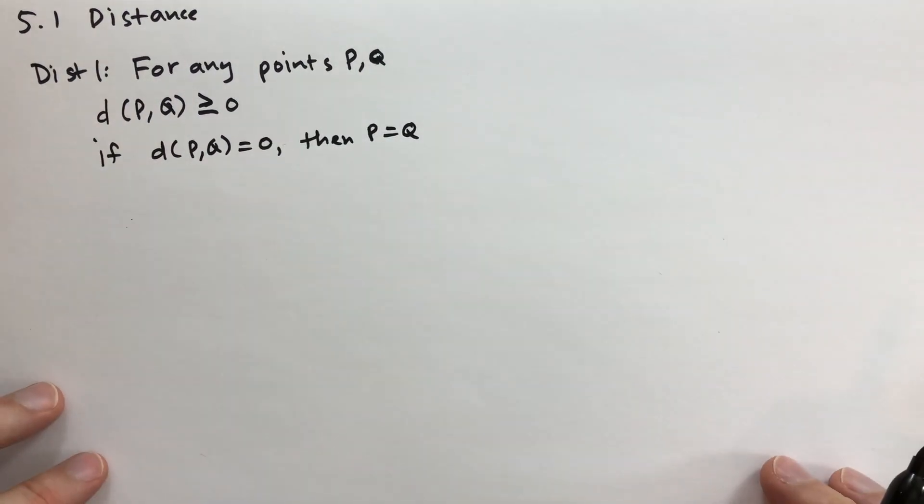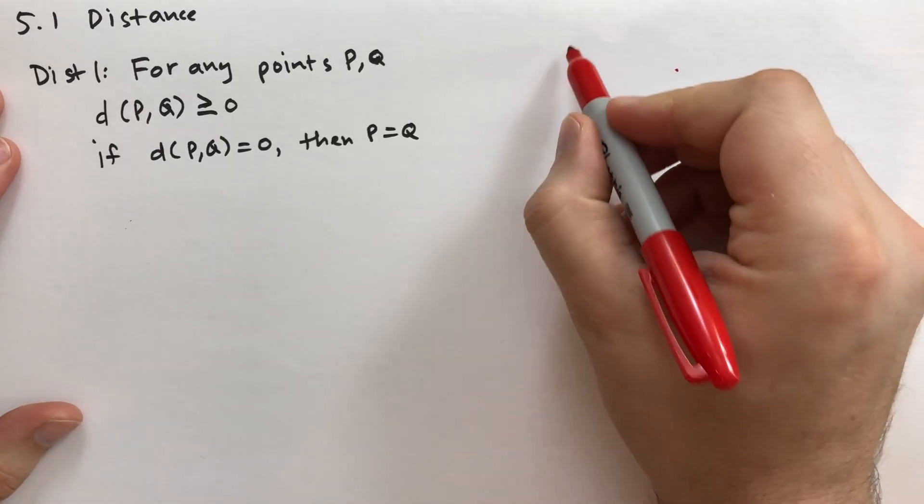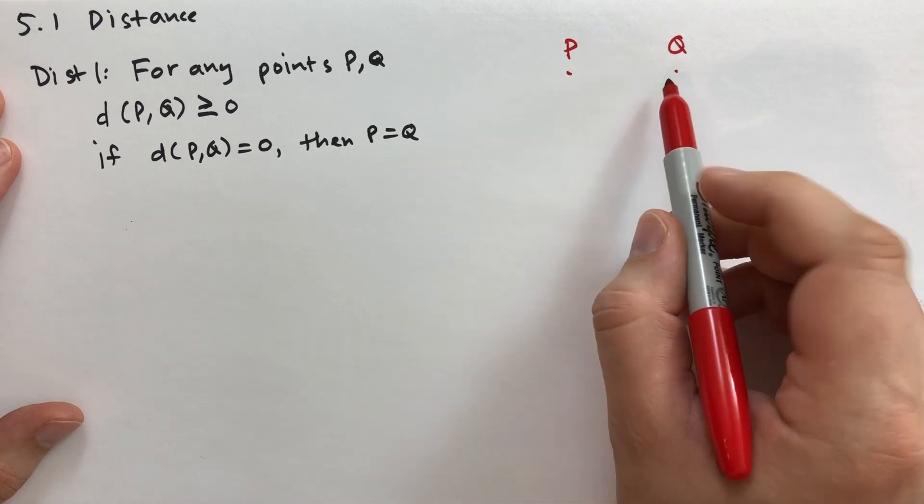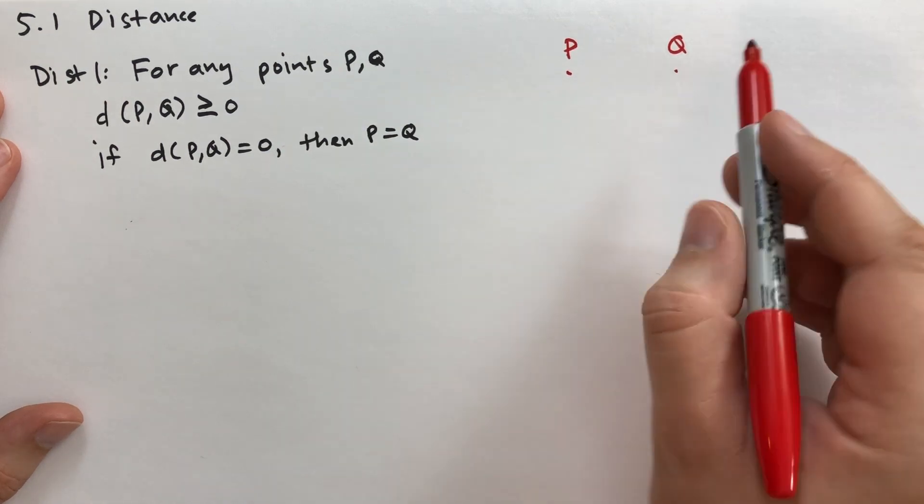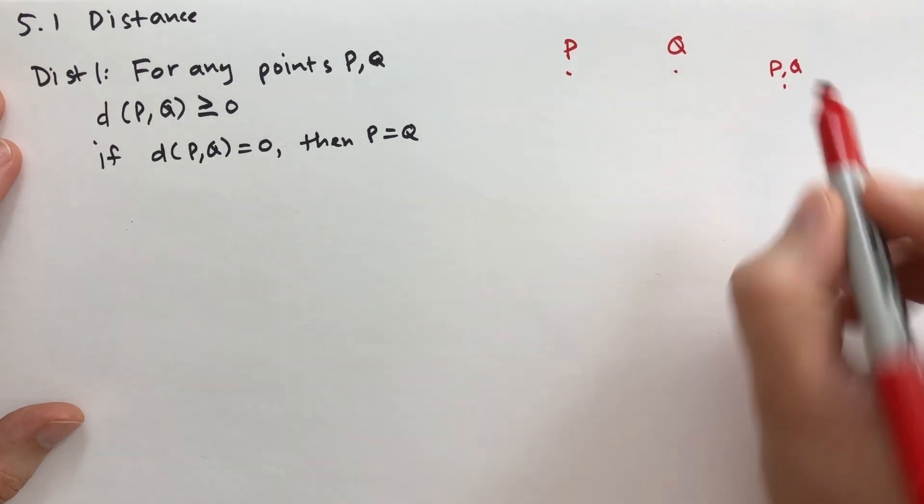That's what P equals Q means, that P is the same point as Q. So graphically or geometrically, using pictures and drawings, what this means is that if you have two points P and Q, there is some distance between those points. But if P and Q are the same point, the distance between them is zero. Pretty simple stuff.